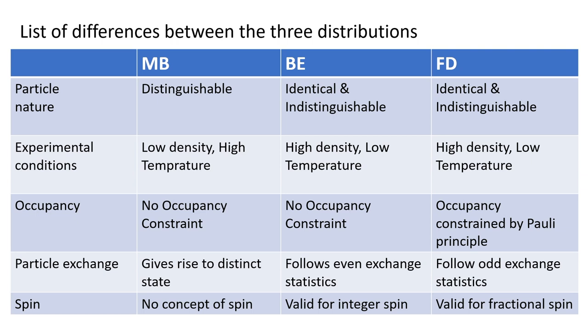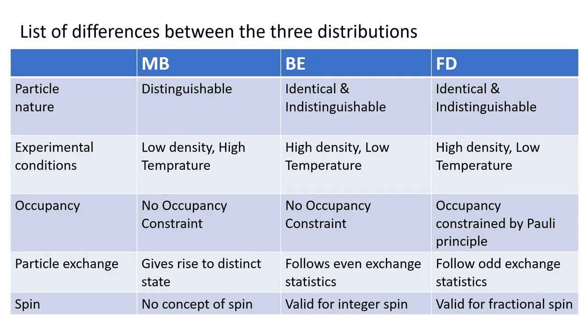What happens to their statistics under particle exchange? In Maxwell-Boltzmann, exchange gives rise to a distinct state. In Bose-Einstein, exchange does not give a distinct state — the wave function remains unaltered. This is called even exchange statistics. In Fermi-Dirac it follows odd exchange, meaning if you interchange two particles you pick up a minus sign, equivalent to a phase of pi. So bosons pick up zero phase under exchange, while fermions pick up a phase of pi.